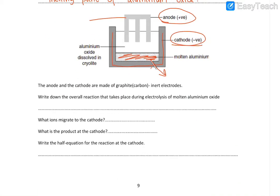Now the anode and the cathode, they are made of carbon inert electrodes. So overall, you're going to have aluminum oxide that splits into aluminum and oxygen.